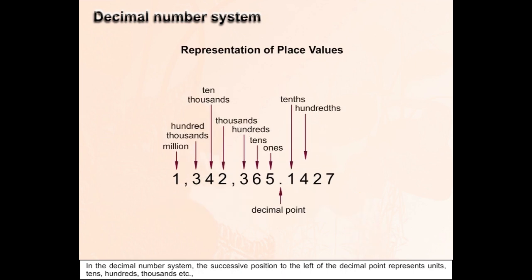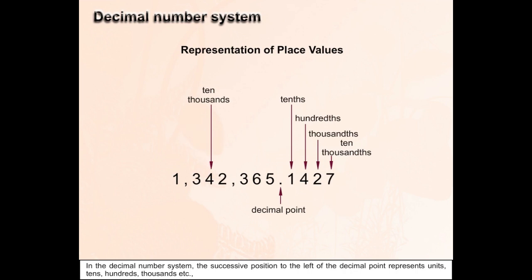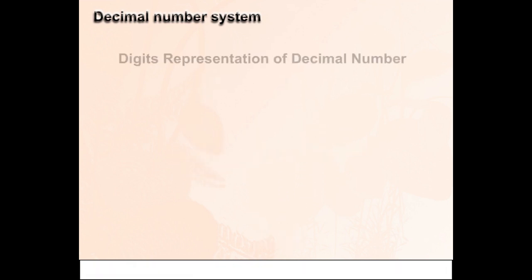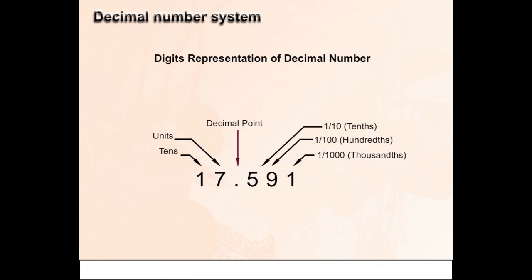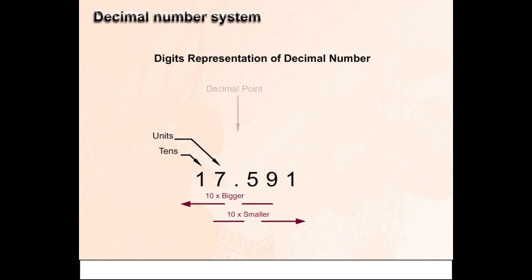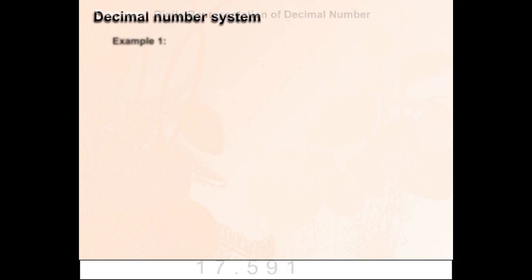to the left of the decimal point represent units, tens, hundreds, thousands, and so on. Digits representation of decimal number - Example 1.